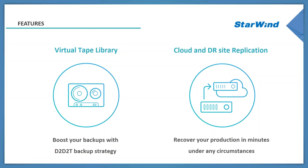With cloud and DR-site replication, there's an option to not only tier to the cloud but also to replicate to a disaster recovery location or replicate the entire site to the cloud. In case of a major outage, you can restore your virtual machines and applications into the cloud or use a disaster recovery location to spin up your production environment where you have power and a reserve data center.